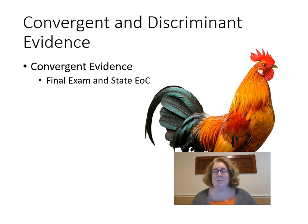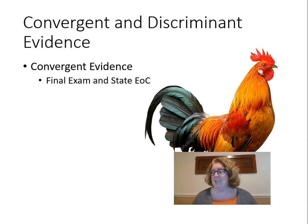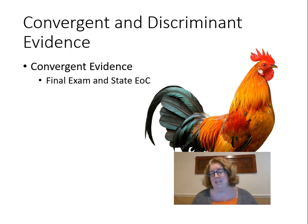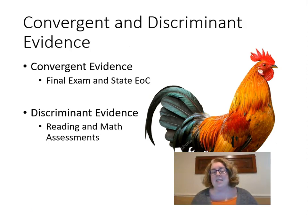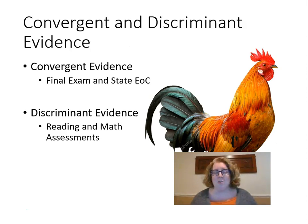Convergent evidence involves two different measures of the same construct — for example, a teacher-created test and a state-created test — and we would expect similar scores. Discriminant evidence would be the math and reading FSAs: they're measuring different constructs, so we would expect different scores. If the scores were the same, it might indicate they're measuring the same construct, which would be a problem — if the math test relies too heavily on reading, we're not really getting a math score.